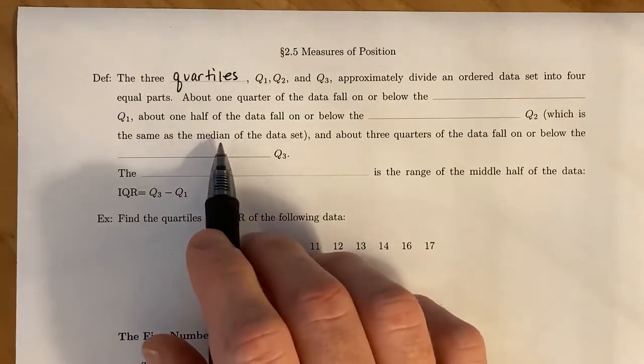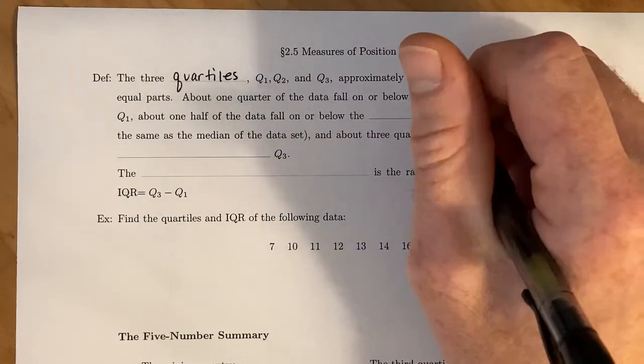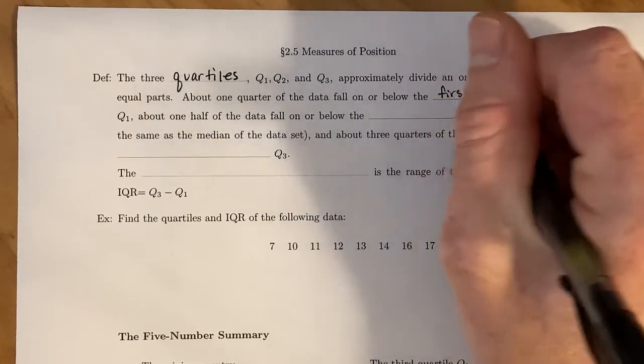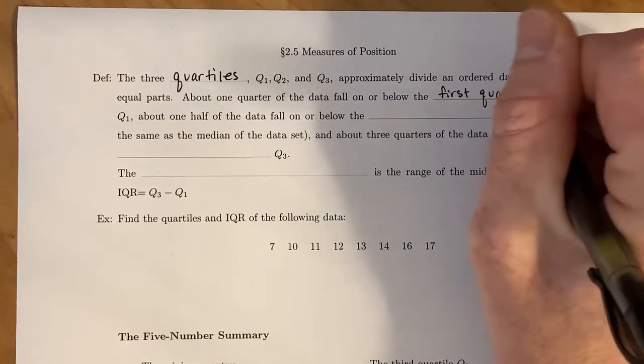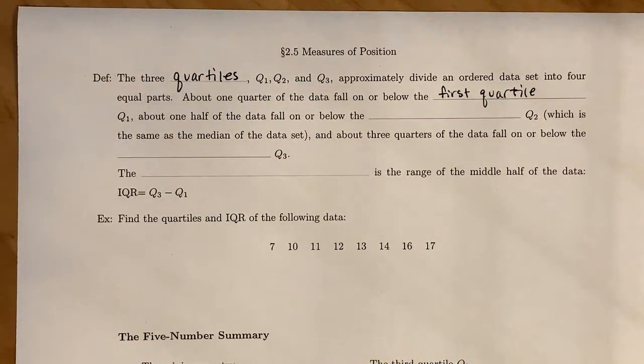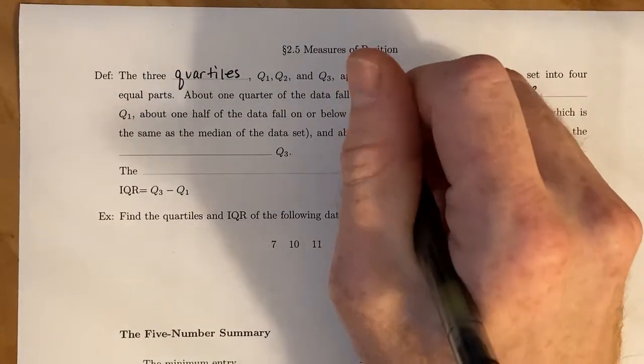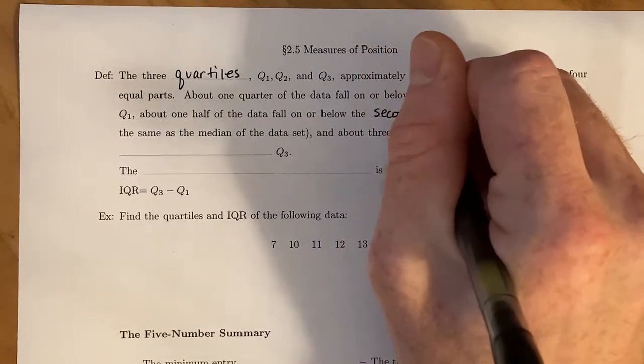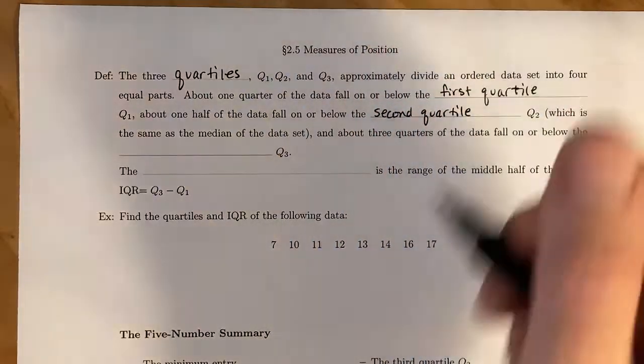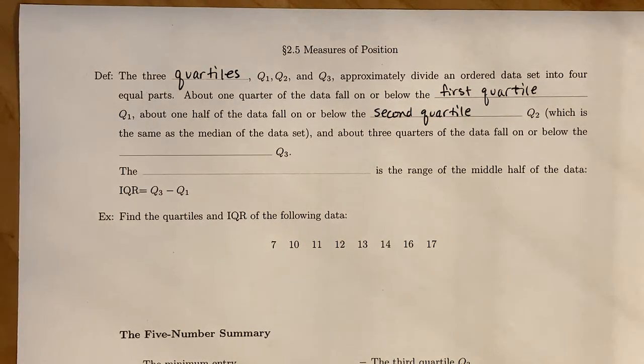About one quarter of the data falls on or below the first quartile, sometimes called the lower quartile, represented with Q₁. About half of the data falls on or below the second quartile. We've already seen the second quartile before—the second quartile is just another name for the median of the data set. You just order your data set, find right where the middle is, and that's the second quartile.